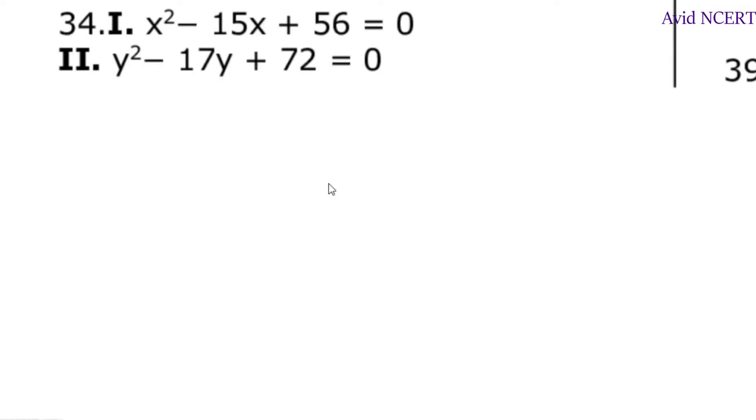The first equation is x square minus 15x plus 56. To find the factors, 56 times 1 is 56, we need 56 which is 7 times 8 is 56.